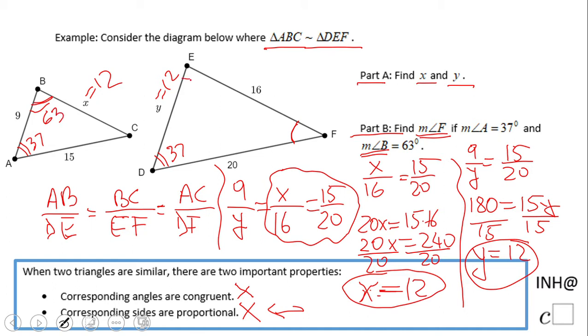How are we going to find the measure of angle F? We're going to have 37 plus 63 plus the measure of angle F equals 180. 37 plus 63 is 100.